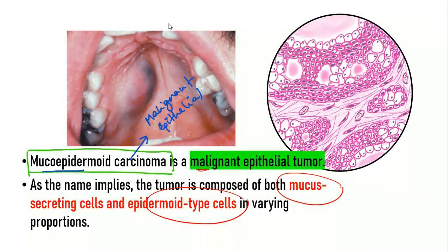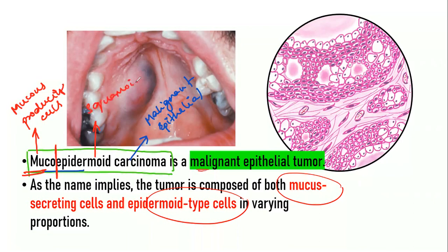The first word, mucoepidermoid, consists of two parts: muco and epidermoid. Muco indicates mucus-producing cells, and epidermoid suggests squamoid cells. In the histopathological section, the mucus-producing cells have abundant foamy cytoplasm with the nucleus pushed to one side — these produce mucin. The epidermoid cells appear polygonal with squamoid features such as intercellular bridges. Together, these compose mucoepidermoid carcinoma.